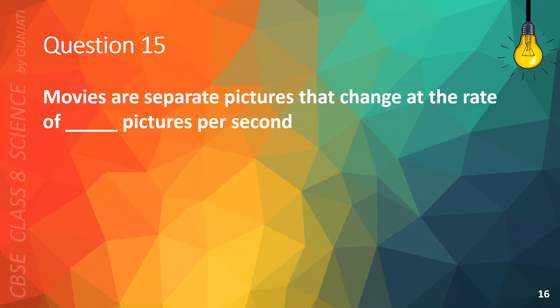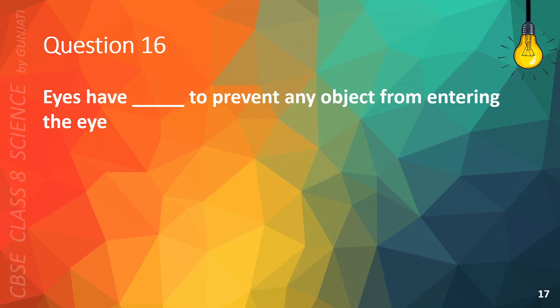Question 15. Movies are separate pictures that change at the rate of blank pictures per second. A. 6, B. 12, C. 24, or D. 32. The correct answer is C, 24.